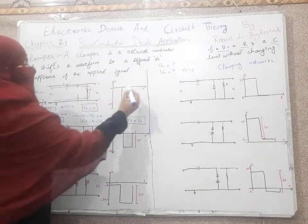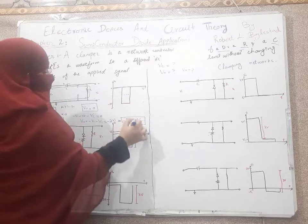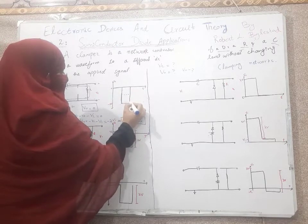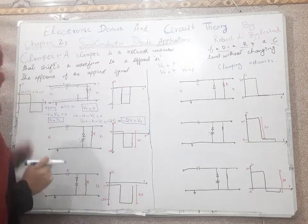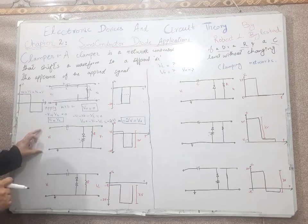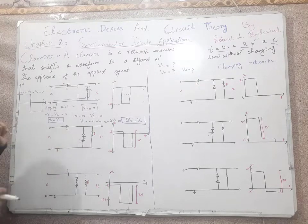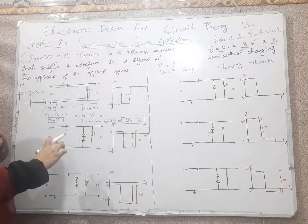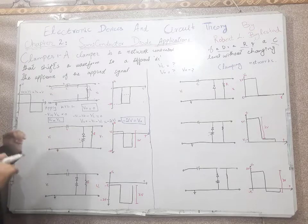This is the positive biased clamper circuit. Since the positive terminal of the battery is connected to the diode, we call it the positive biased clamper circuit.